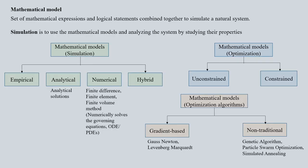Let us spend some time on mathematical models. A mathematical model is a set of mathematical expressions and logical statements which are combined together to simulate a natural system. Many scientists argue that any phenomenon happening in our life can be mathematically expressed. The majority of phenomena can indeed be expressed mathematically, and when you combine logical statements with mathematical expressions, you reach very close to the natural system or its happenings. This is the objective or target of mathematical models.